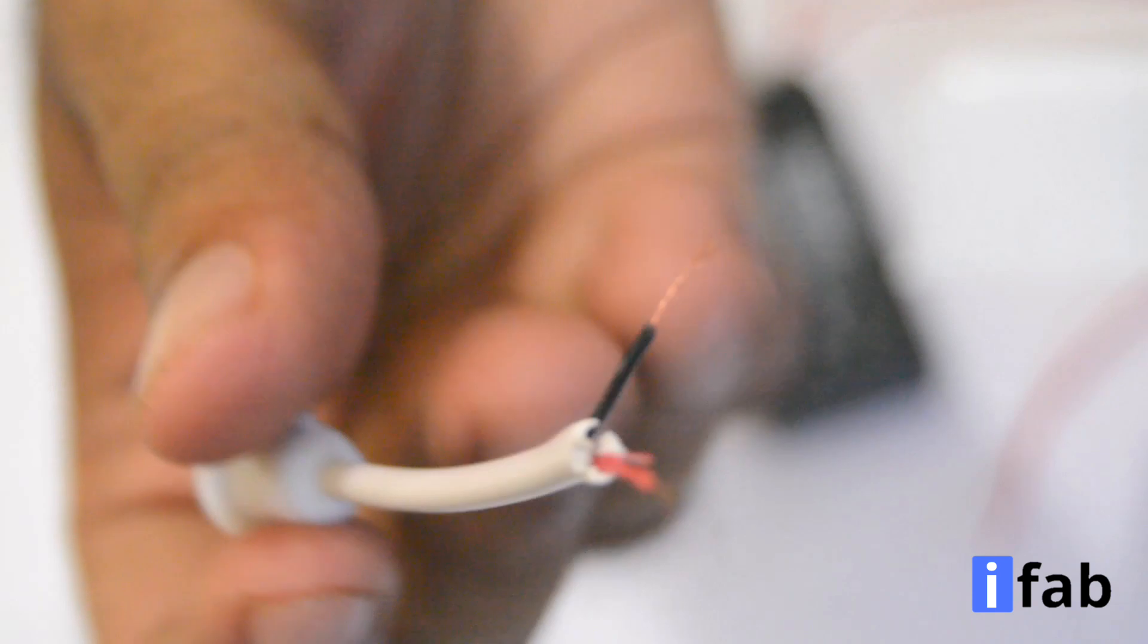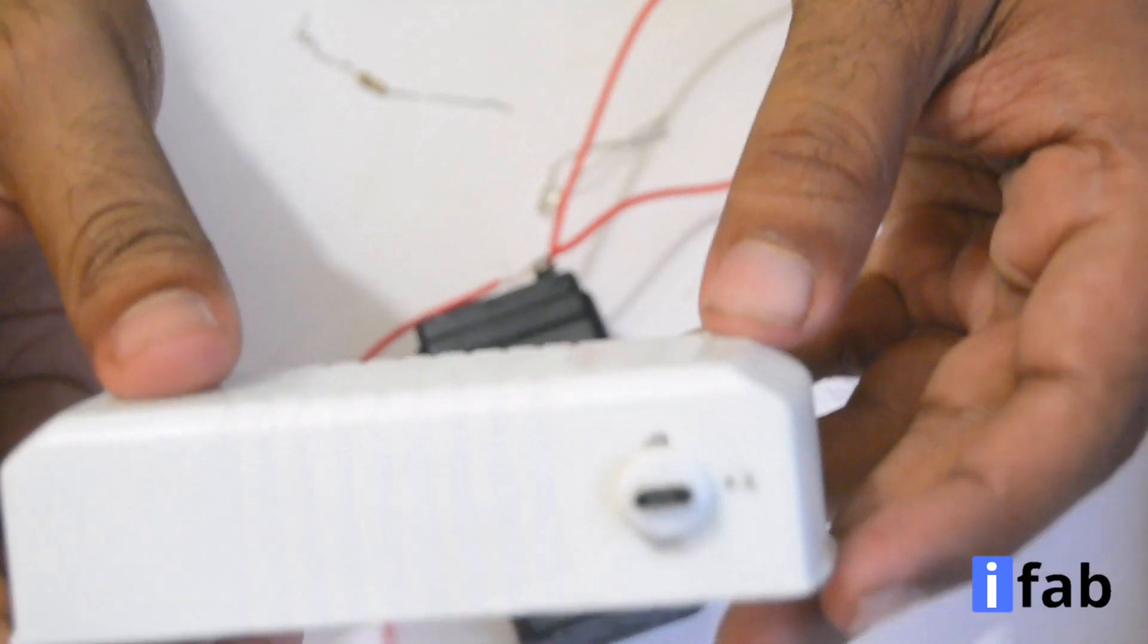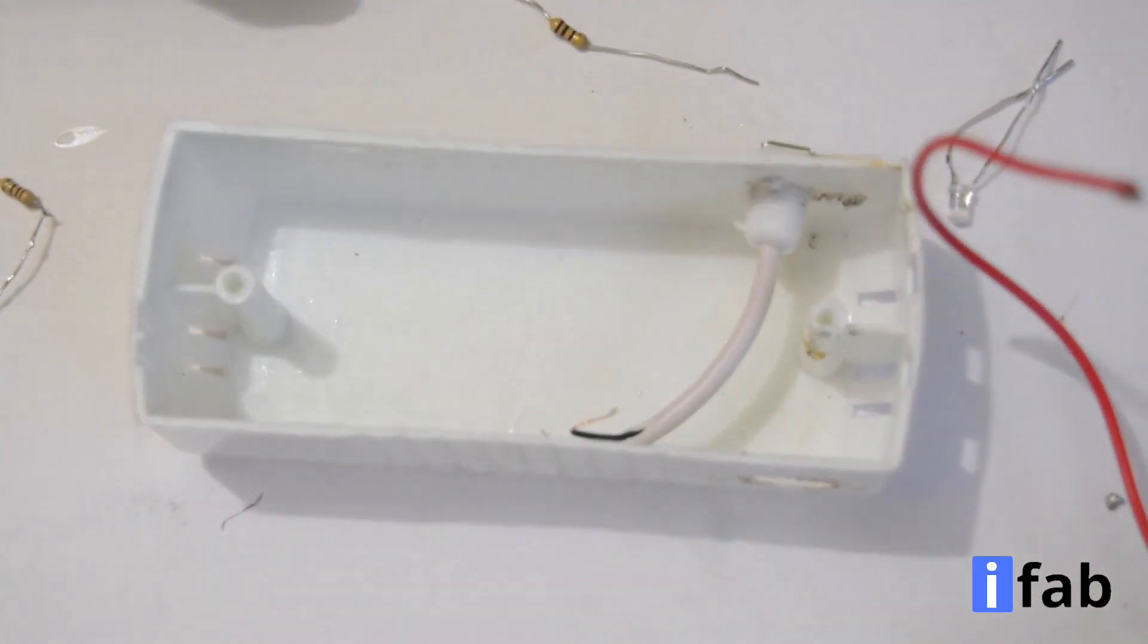This is a micro USB port so you can charge with your smartphone charger. Fix it inside the electronic case. You can also use a little bit hot glue and you can solder it tightly through the holes you made.